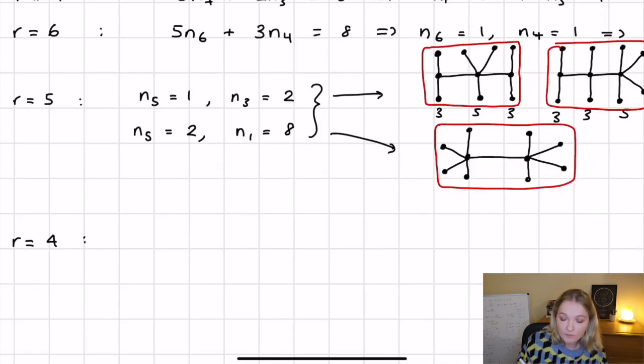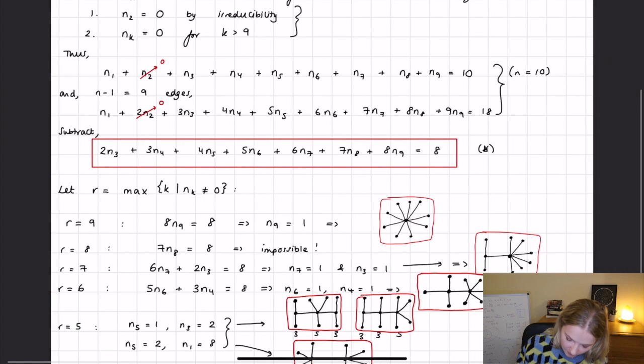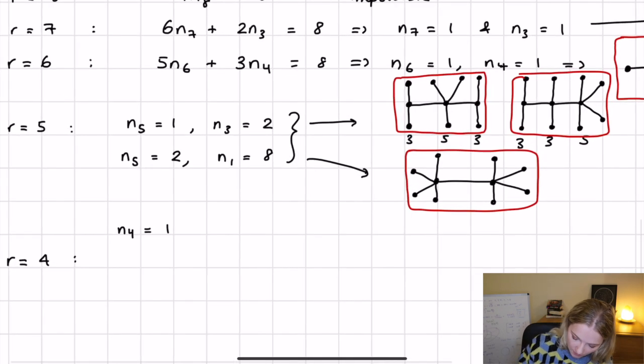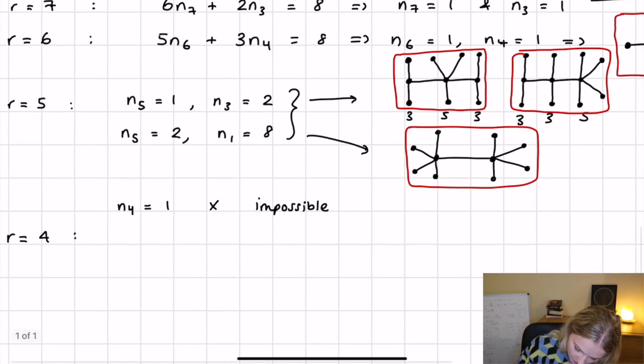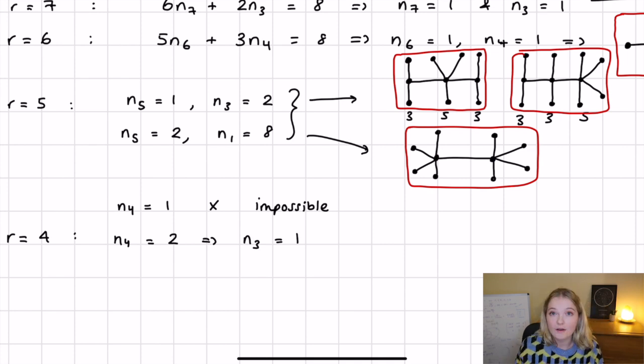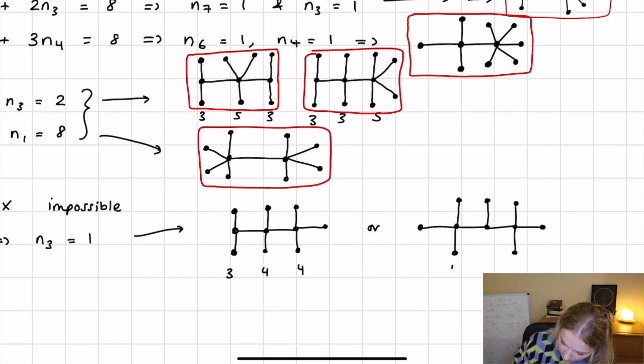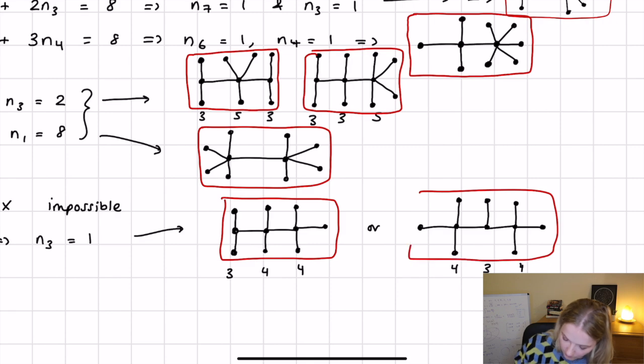r equals 4 condition. Now if we follow what we were doing before and say that n4 equals 1, what you find is that this is actually impossible. So if you look at where n4 is 1 here, we can't have another value, we can't have another node in there that meets the condition that we have in the equation. So n4 equals 1, that's impossible. But what we can do is we can have n4 equals 2, and that makes n3 equals 1. So we have a condition here for the r equals 4, and that gives a graph that looks like this. This is a 3-4-4 graph, or we can have 4-3-4 graph. Okay, we're getting through now. Two more. I've done two more. Okay, cool.